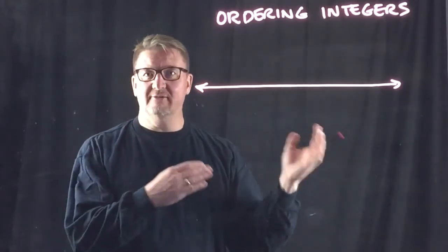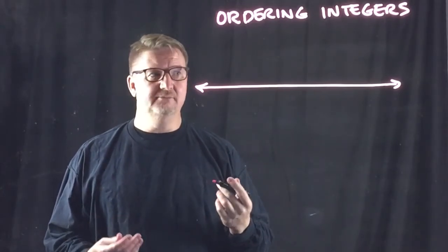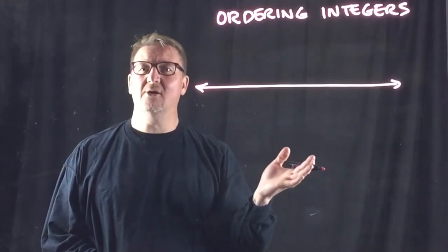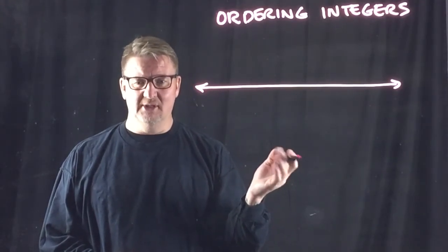And now the number line is going to vary based on the numbers that you get. You might want to start with zero, put some positive numbers, put some negative numbers, but you may not always need to do that. It just depends on your numbers.